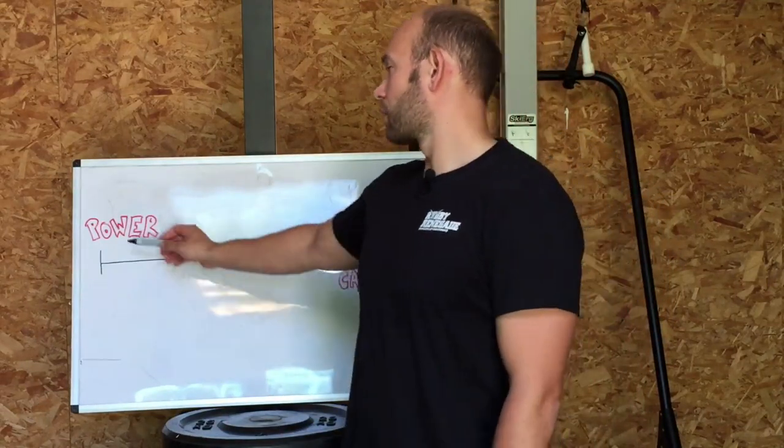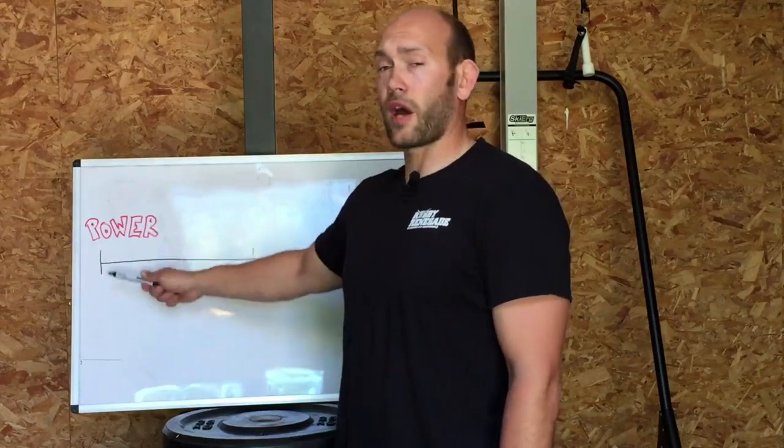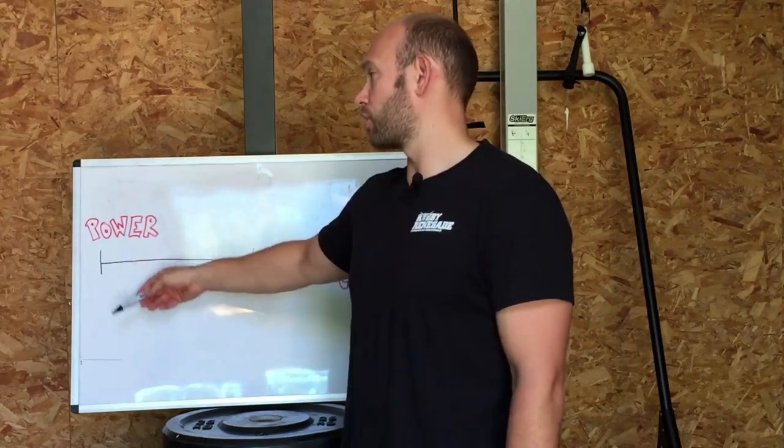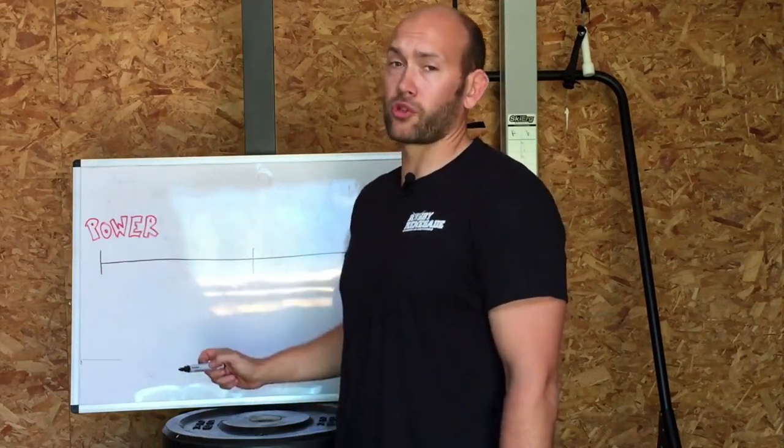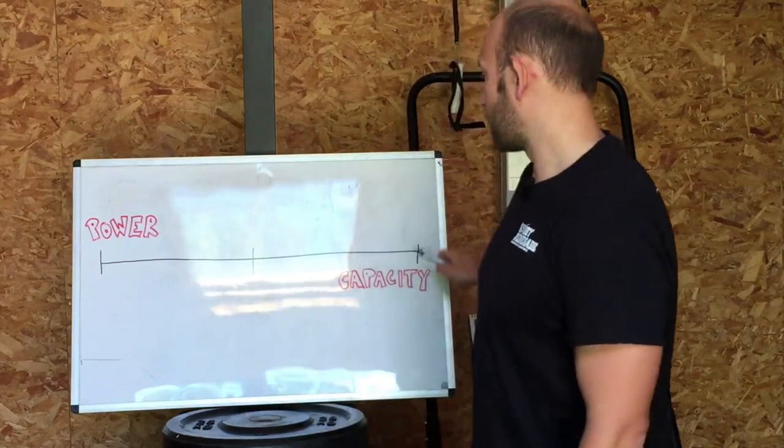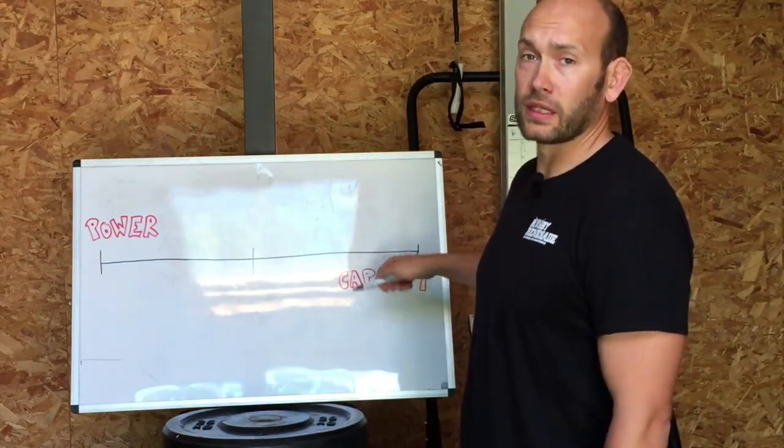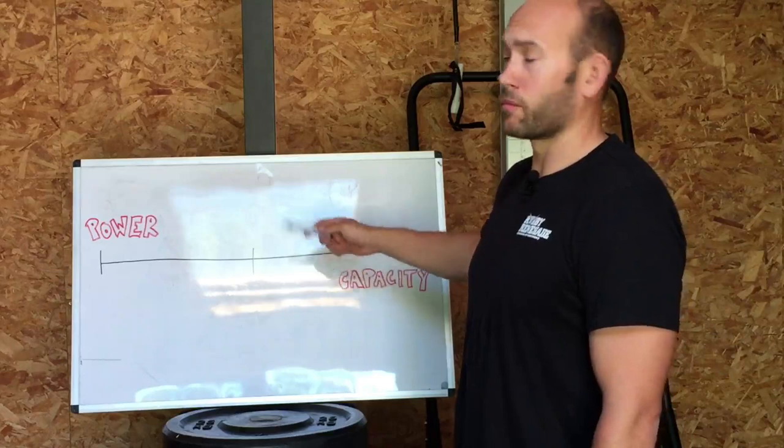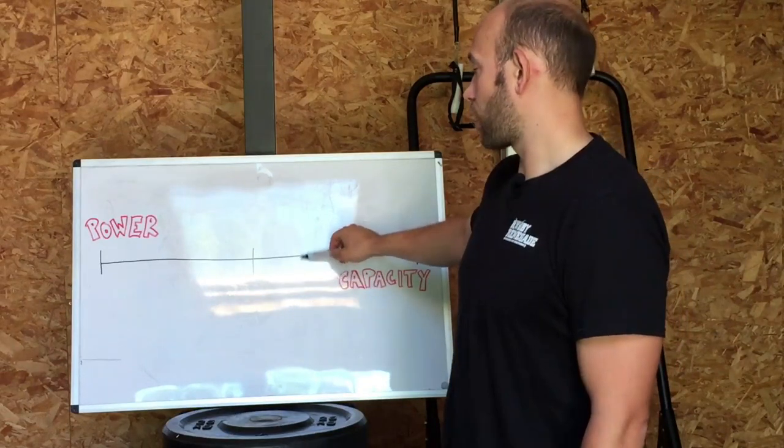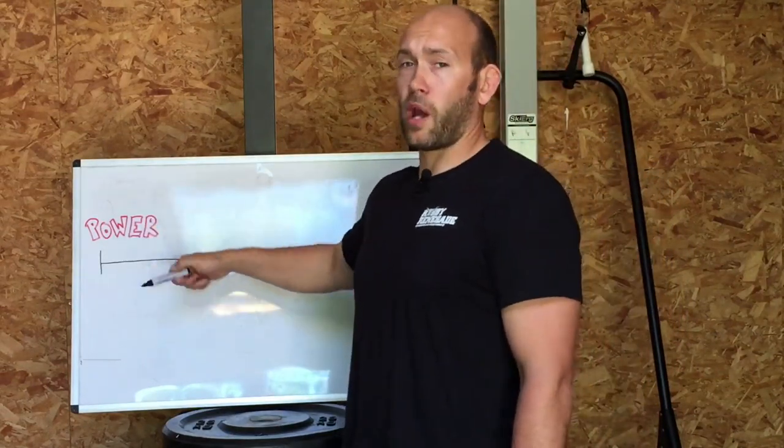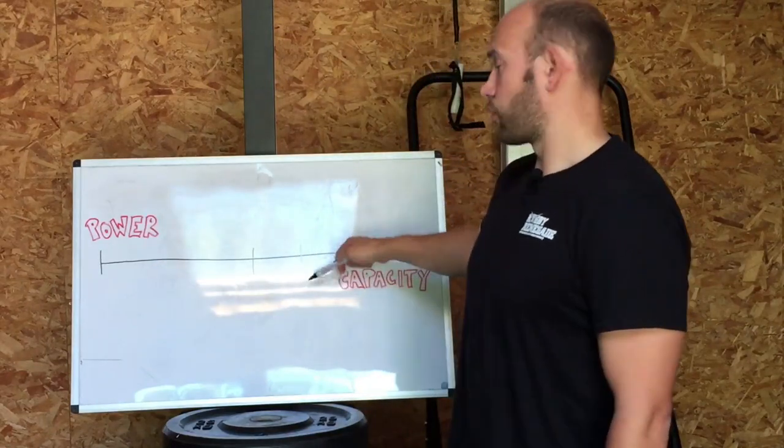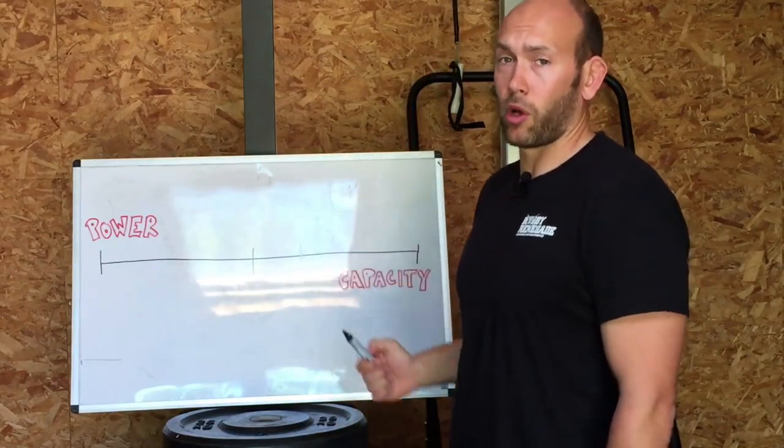Our training needs to cover power work when we're fresh with full recovery so we can increase power output. Then we need to train capacity to recover from intermittent periods. And we need to train the middle ground—repeat efforts of power activities but being able to repeat continually with minimal drop-off.